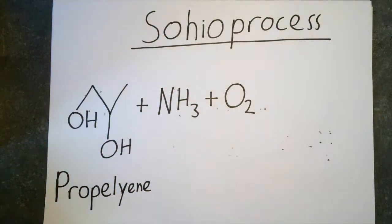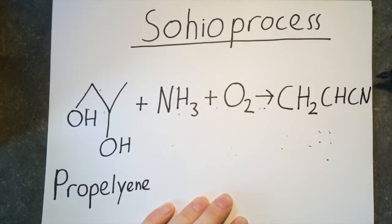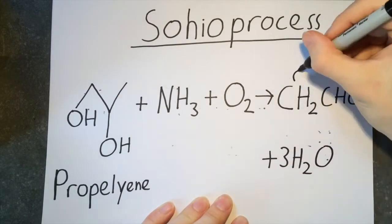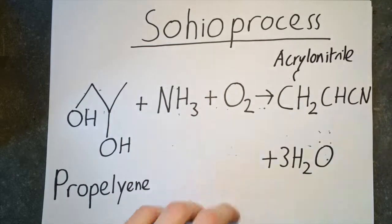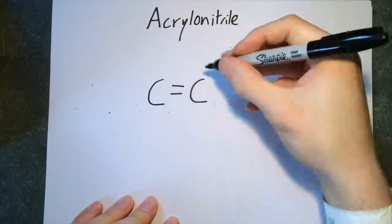Carbon fiber starts out as propylene and ammonia, which are reacted together via the Sohio process. This reaction forms acrylonitrile, the base unit that forms PAN, which forms the polymer backbone of the carbon fiber.